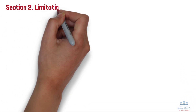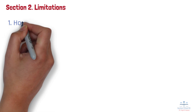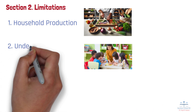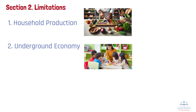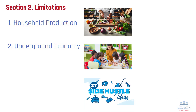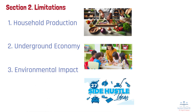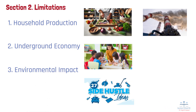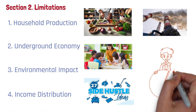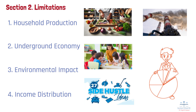Section 2: Limitations. While GDP is powerful, it does have its limitations. Here are a few things GDP leaves out. Number 1: Household production — any goods or services produced at home, like cooking or childcare, don't count. Number 2: Underground economy — informal or unreported transactions, like a side hustle, are also not included. Number 3: Environmental impact — GDP doesn't account for negative effects like pollution. Number 4: Income distribution — GDP tells us the size of the economic pie, but it doesn't tell us how that pie is divided among people.